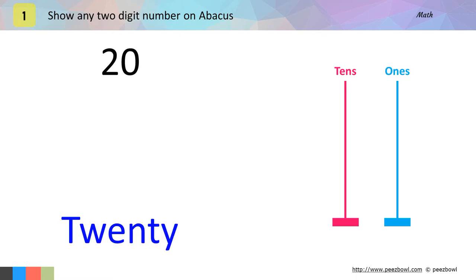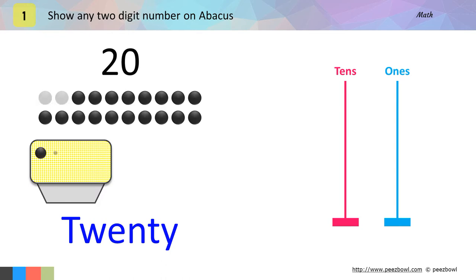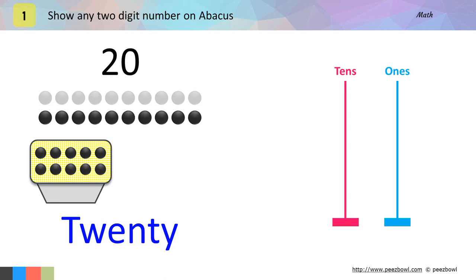I will take number 20 first. For number 20, we have 20 balls as you can see. So like we did in the earlier example, I will bring one box and place 10 balls in this box. So I place 1, 2, 3, 4, 5, 6, 7, 8, 9 and 10 balls in this box.